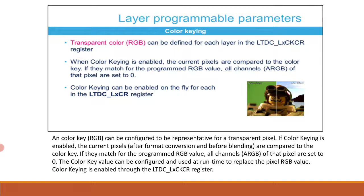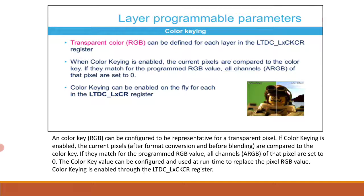There are four interrupt events available in LTDC. The line interrupt is generated when a programmed line position is reached. The register reload interrupt is generated when the shadow registers are reloaded during the vertical blanking period. The FIFO underrun interrupt is generated when a pixel is requested from an empty layer FIFO. The transfer error interrupt is generated when an AXI bus error occurs during the data transfer.